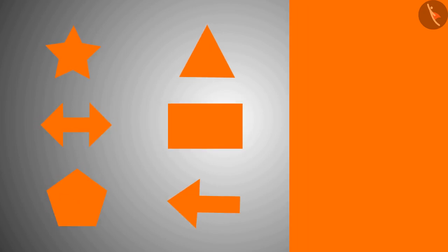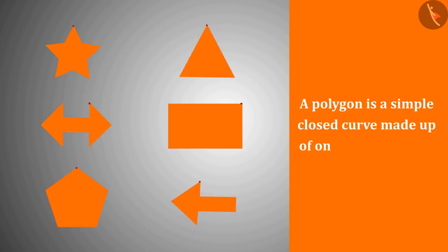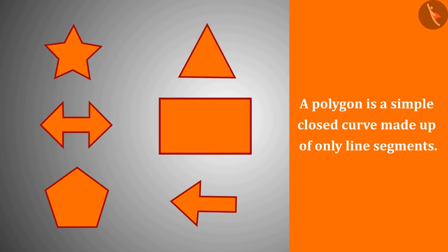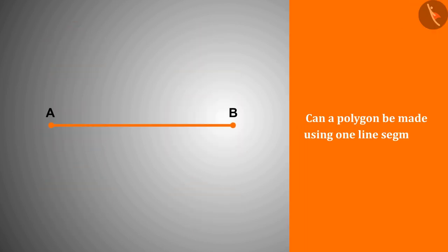So now we have a meaningful definition of polygon which says: a polygon is a simple closed curve made up of only line segments. These are all polygons. So now can you tell if a polygon can be made from a line segment?